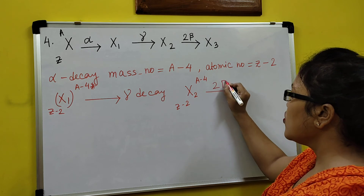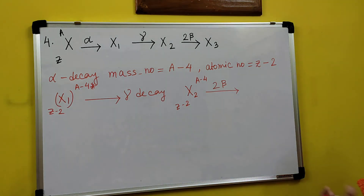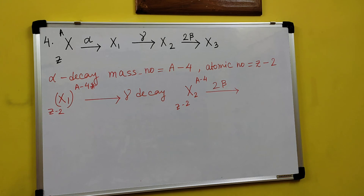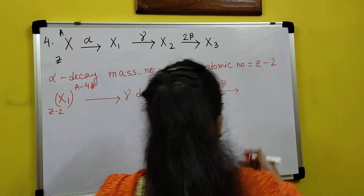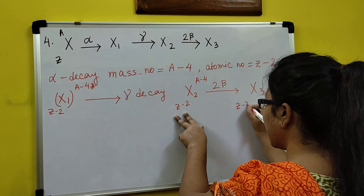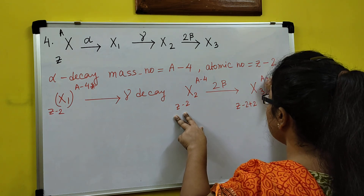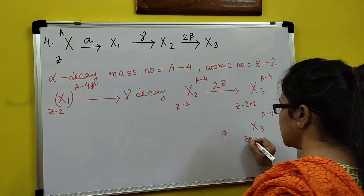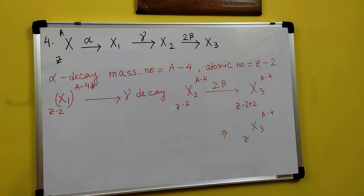Now 2 beta decays. When 1 beta decay happens, atomic number increases by 1. So 2 beta decays means atomic number increases by 2. So X3's atomic number will be Z minus 2 (already there) plus 2, which equals Z. And mass number remains A minus 4. So X3 is (A minus 4, Z). This kind of question will be there in the exam — without any hesitation you can do it, because all are very easy. You only need to remember the alpha and beta decay rules. Thank you guys.